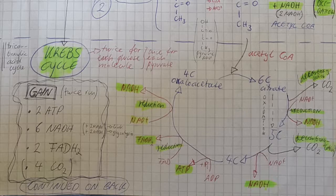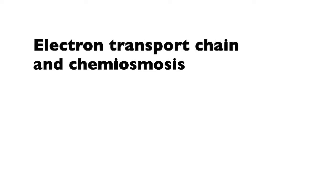To sum up the results: if we run the Krebs cycle twice, then everything we've gotten so far is two ATP, six NADH, two FADH2 — those are the two kinds of electron carriers — and four CO2. And now we're finally getting to the fun part, which is the electron transport chain.